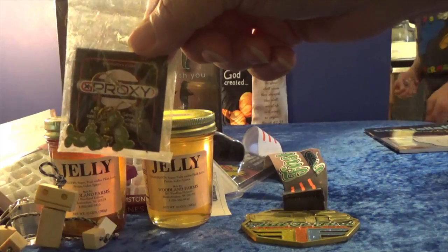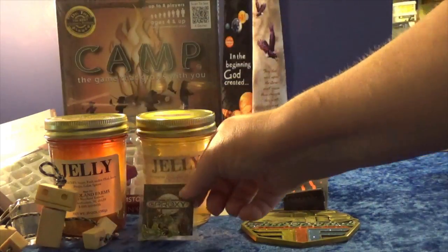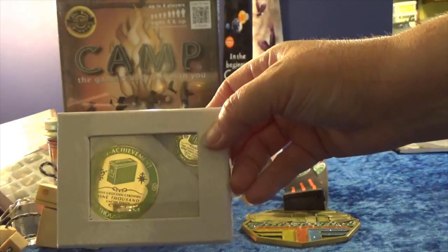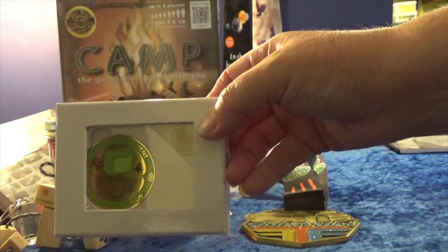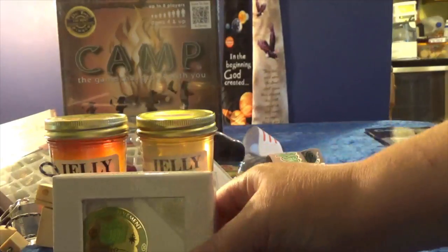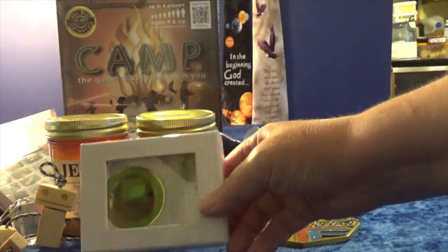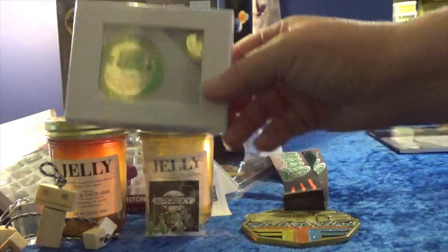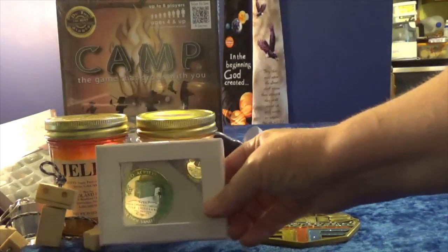When he wasn't looking I went and got him his Geo achievement coin for a thousand finds. Crazy Dave's Crew has now found over a thousand, so we've got our coin and it's also got a little pin and he can wear that as a tie tack if he so desires.